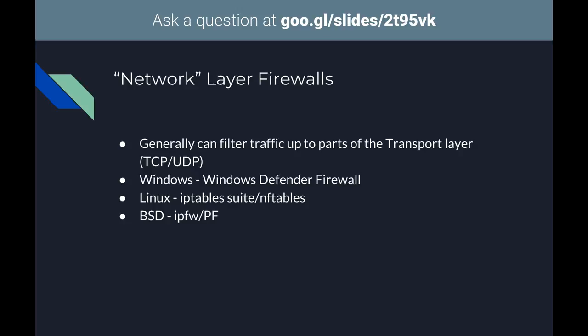The Windows Defender Firewall is the annoying pop-up when you plug into a new network asking if it's private, corporate, or public — that's what it's configuring. On Linux you'll deal with the iptables suite or more recently nftables, which apparently deprecated iptables three years ago. On a BSD system — and if you're on Mac you're on a BSD system — you'll be dealing with IPFW or PF. Knowledge of BSD is useful because upper-echelon firewalls like Juniper's Junos OS are built on FreeBSD.